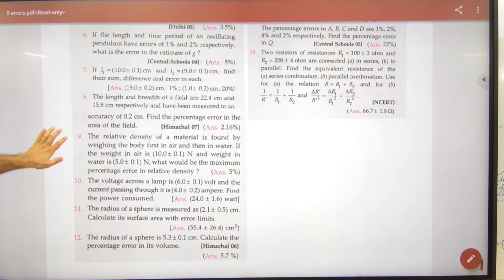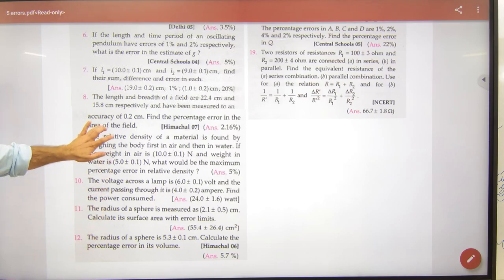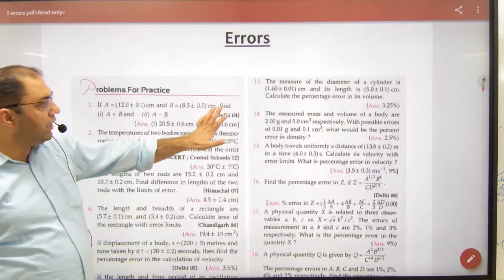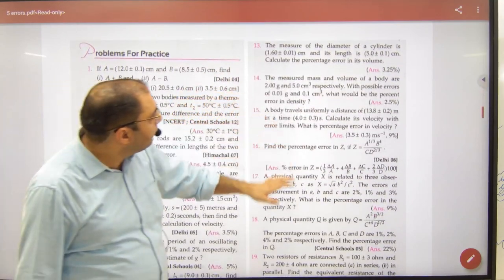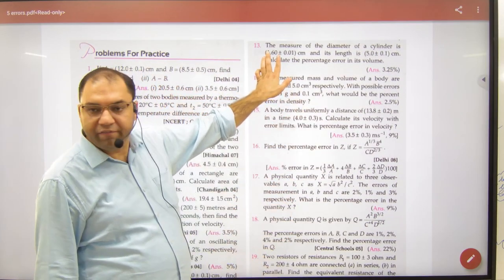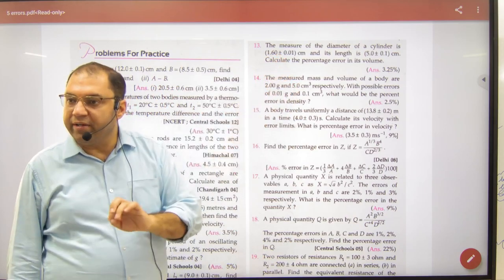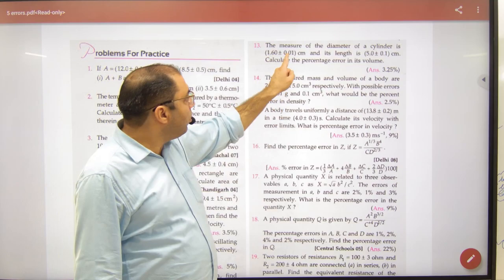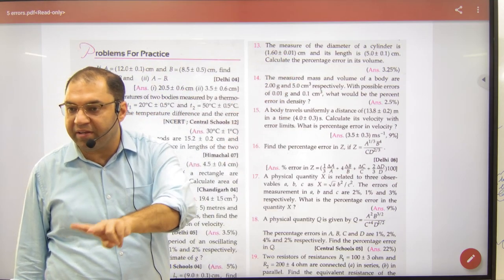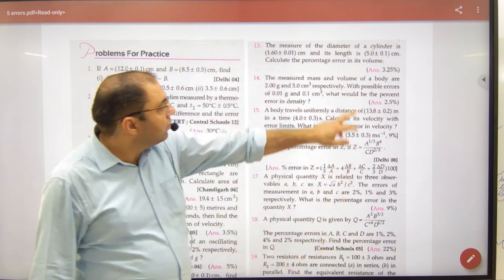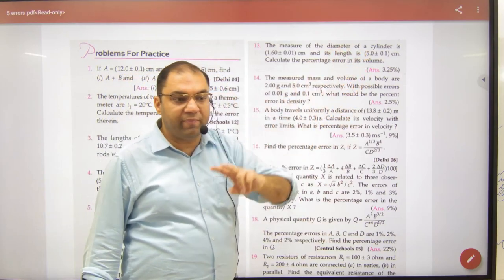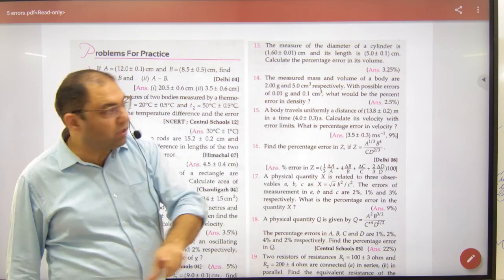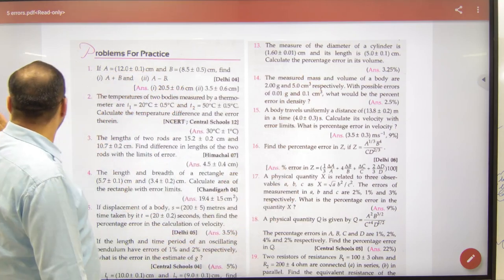Next hai. Ninth ke baad 10th, 11th, 12th, 13th. Diameter of this cylinder given hai. To agar mujhe radius nikalna hai. To kya karu isko divided by 2. Isko bhi aur isko bhi. Dono ko 2 se divide karna hai. To r plus minus delta r a gya. Length given hai. To l plus minus delta l bhi a gya.